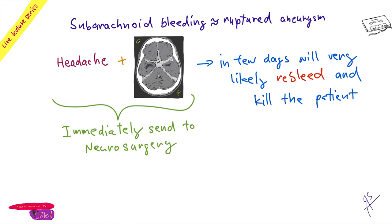If you find blood on CT, act immediately. Watch out — on some CTs you may not see blood. In that case, perform a lumbar puncture; if there is blood in the CSF, this is diagnostic. Sometimes aneurysms are large enough to be partially visible on CT — they may have ruptured but been temporarily blocked by a thrombus, but this won't last.